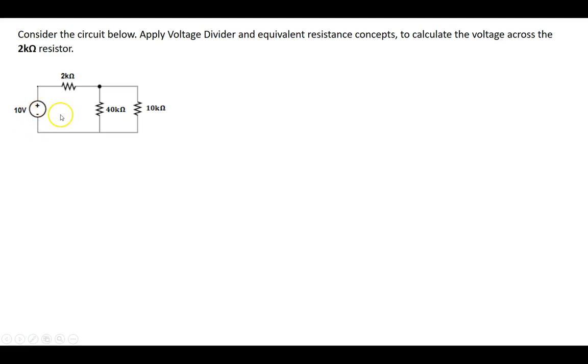Now, taking a look at this circuit, we see that we cannot currently directly apply voltage divider because not all the resistors on this circuit are actually in series. So first, let's take a look here. I see that this 40 kOhm resistor and that 10 kOhm resistor are actually in parallel to each other.